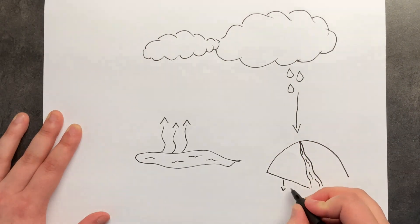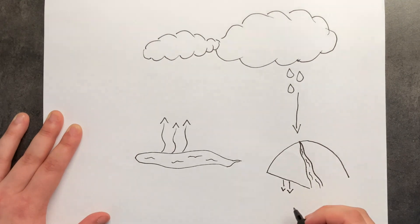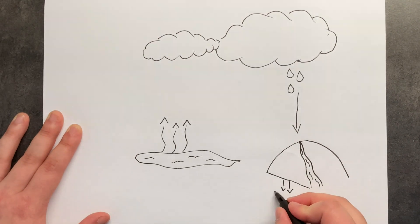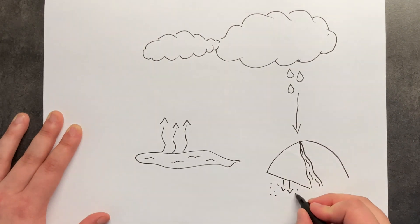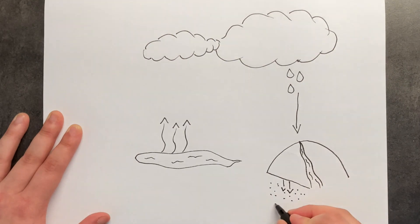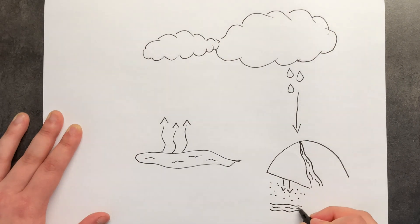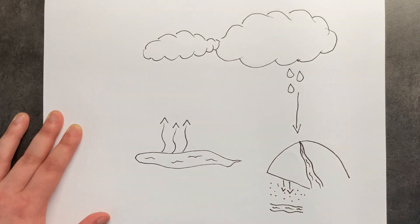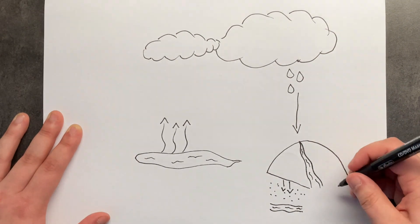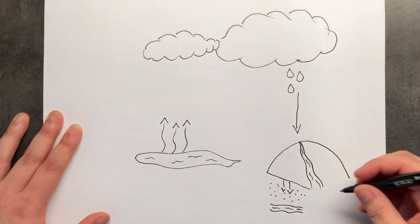Some of the water is going to be sucked into the ground, and this water is called groundwater. This is the type of water that we can drink, because it's been filtered through the different particles in the ground. It's become very, very clean.